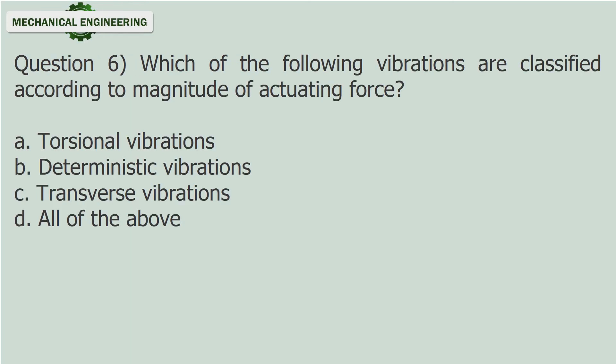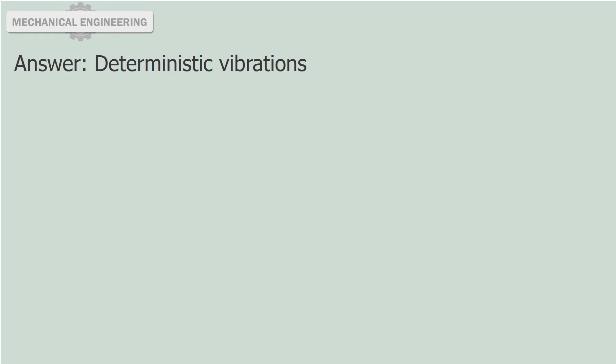Question 6: Which of the following vibrations are classified according to magnitude of actuating force? a. Torsional vibrations. b. Deterministic vibrations. c. Transverse vibrations. d. All of the above. Answer: Deterministic vibrations.